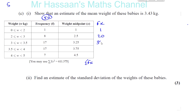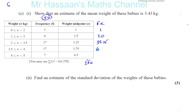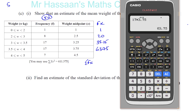So here you have 55.25. Then you have 17 times 3.75, which gives you 63.75. And then you've got 4.5 times 7, which gives you 31.5.